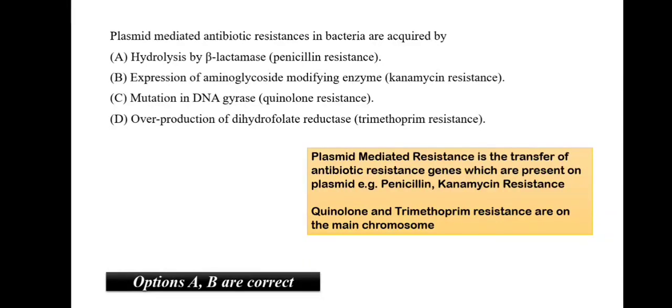Plasmid-mediated antibiotic resistance in bacteria acquired by plasmid is an extra-chromosomal circular DNA present in the bacteria. This plasmid resistance, perfect examples are penicillin and kanamycin resistance where there is transfer of antibiotic resistance genes which are present in the plasmid. The other two genes, quinolone and trimethoprim resistance genes are present in the main chromosome. Thus, only A and B are the correct options.